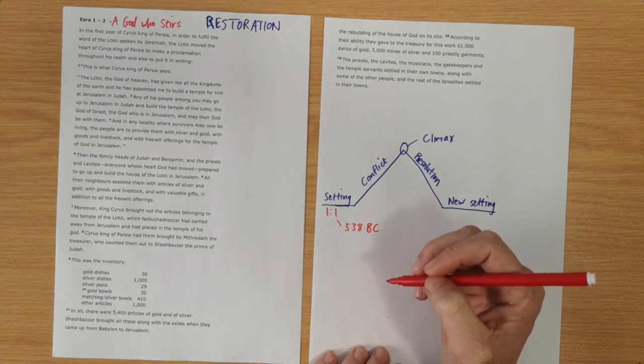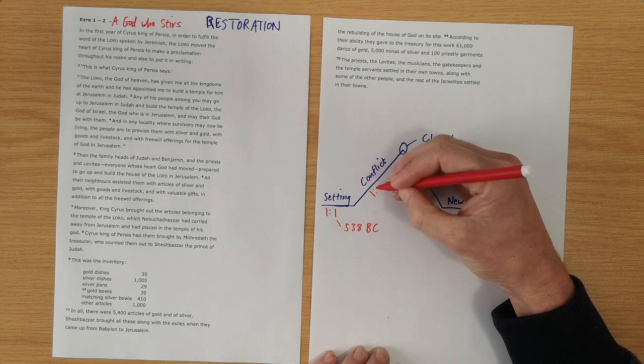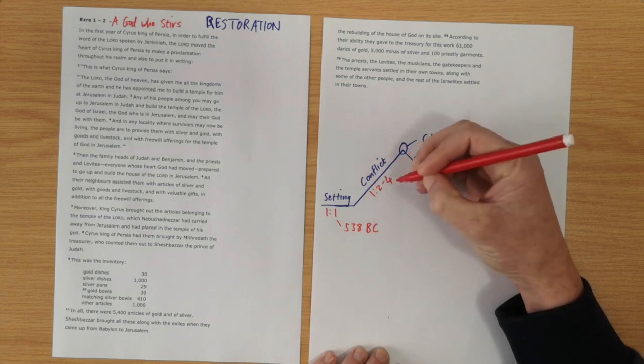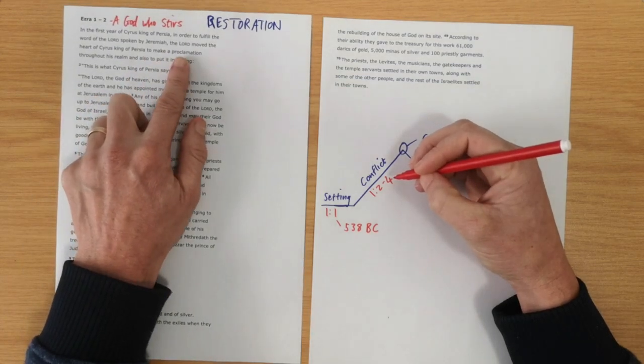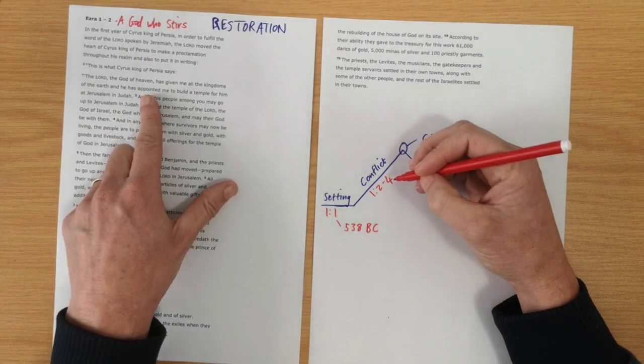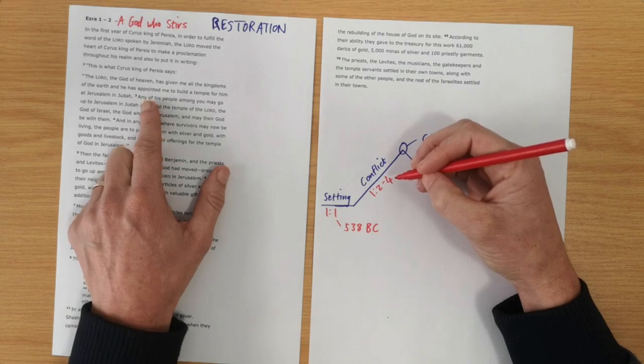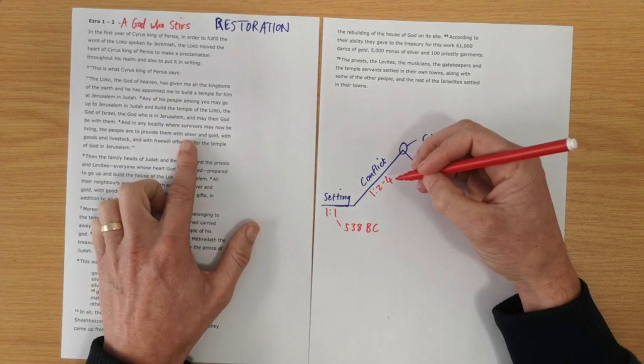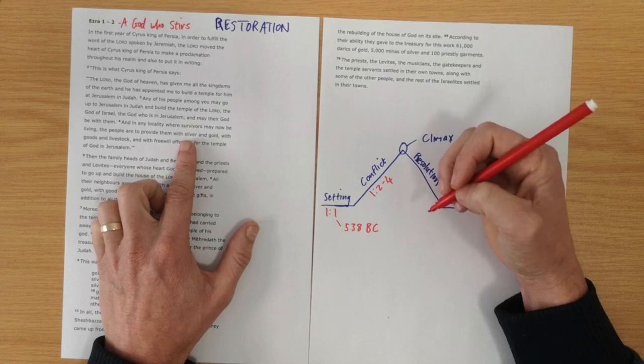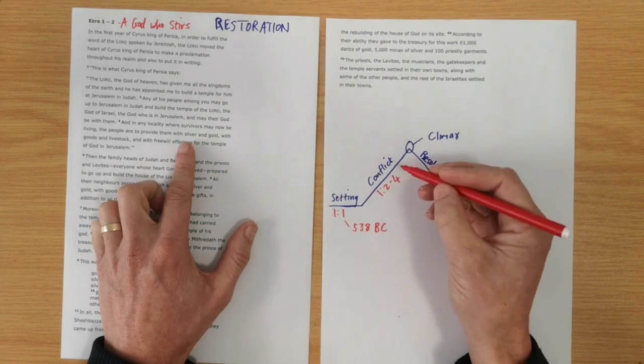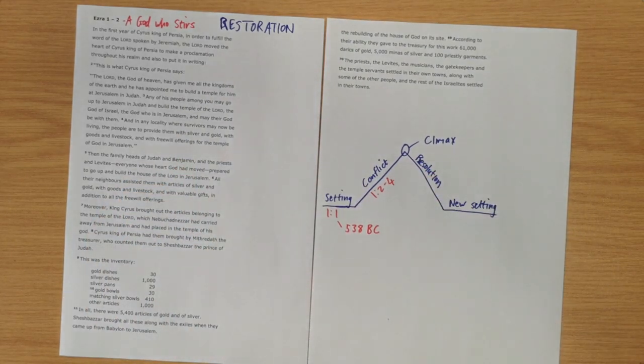Now, the conflict is given in chapter 1 verse 2 to 4. And we see that Cyrus makes this proclamation to say that God's people can go home, back to Jerusalem. They can rebuild the temple. And he says that he's going to give them everything they need for this rebuilding project. So, that is setting up the conflict in that it's setting up tension in the story. This pagan king is sending them home. Is this actually going to happen?